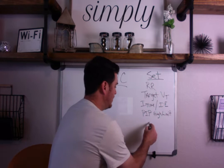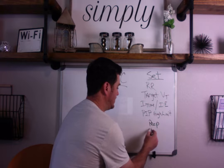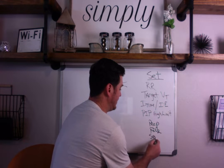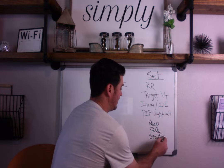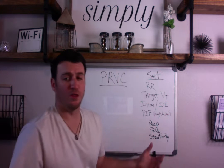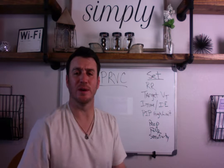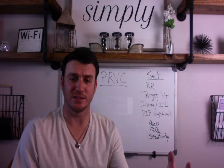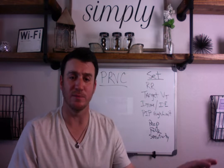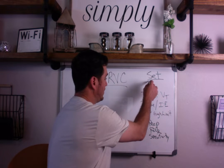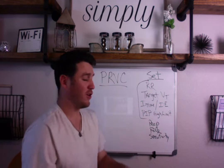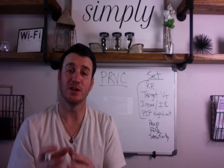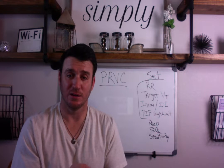Obviously you also set PEEP, FiO2, and sensitivity. Those are your standard settings that go into just about every mode. But the first four settings — respiratory rate, target tidal volume, inspiratory time, and pressure limit — are the key settings you really need to understand when you're in PRVC.